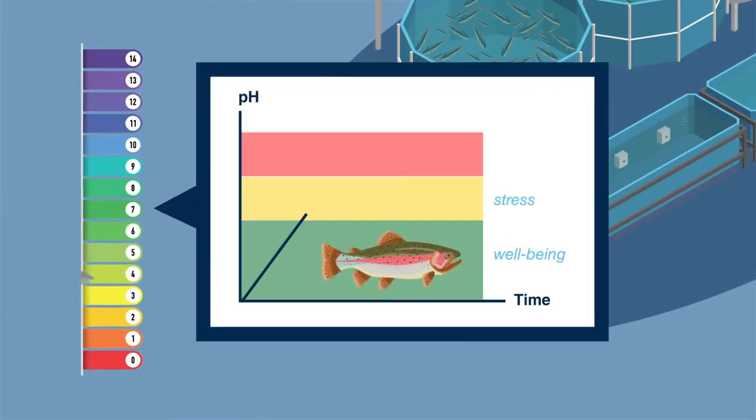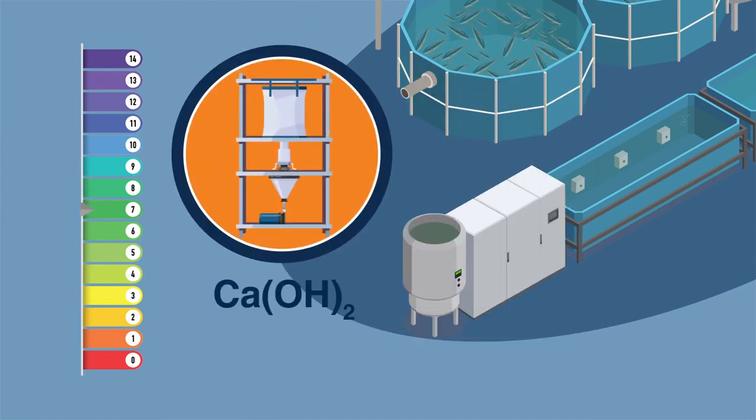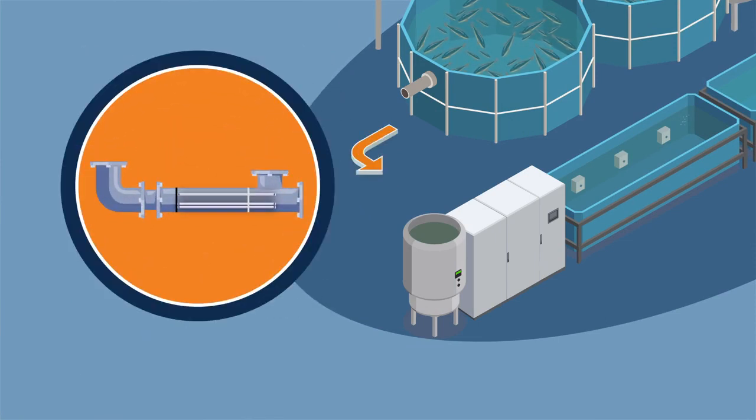Adjustment of pH in the process water is an important parameter for fish growth and well-being. Dosing of hydrated lime keeps the pH level at the right target. The incoming water can be treated with a ProMinent UV system, which will increase product yields.